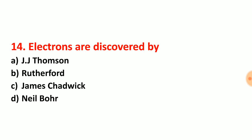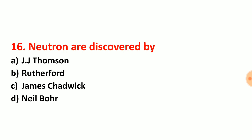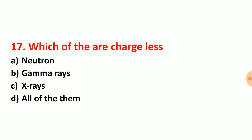Question number 14: electrons are discovered by J.J. Thomson. Option choice A is the correct answer. Question number 15: protons are discovered by Rutherford. Option choice B is the correct answer. Question number 16: neutrons are discovered by James Chadwick. Option choice C is the correct answer.